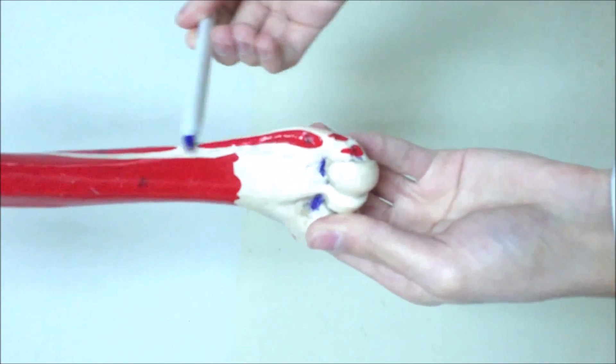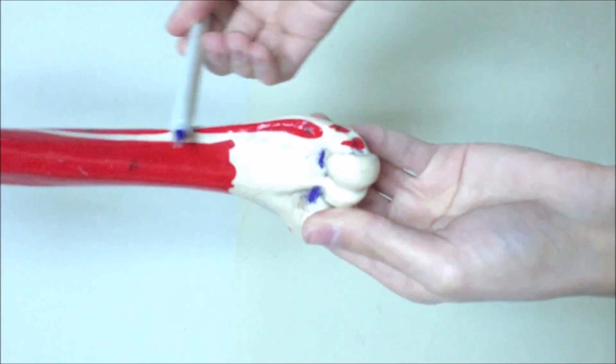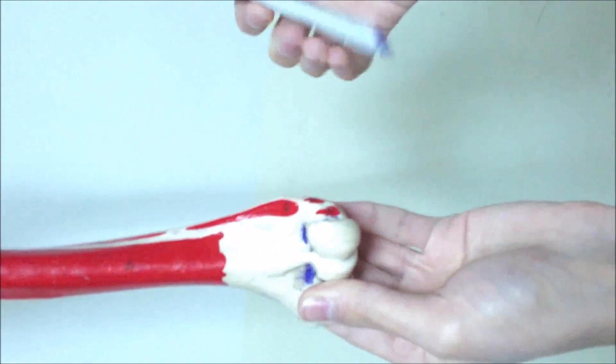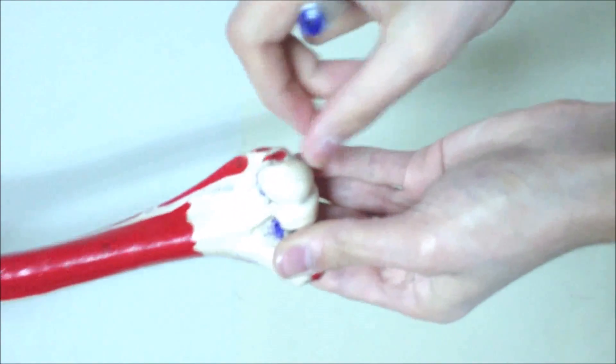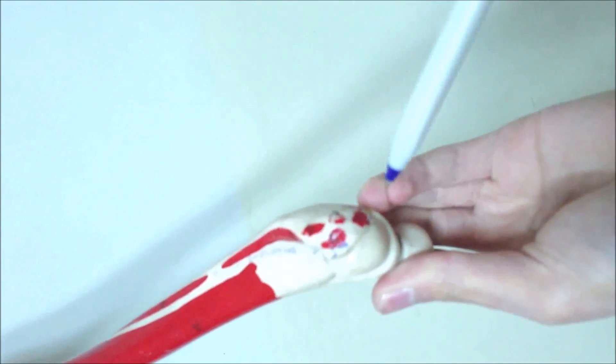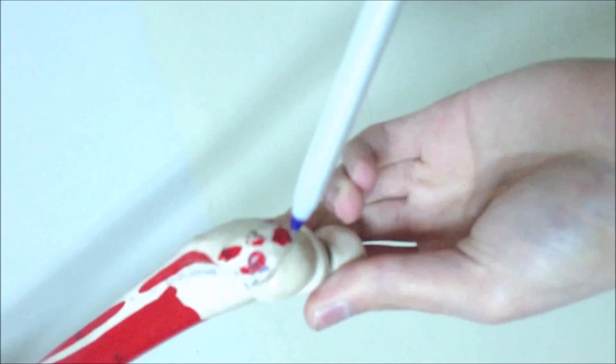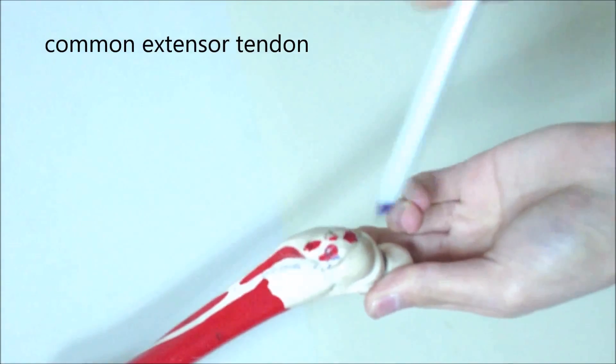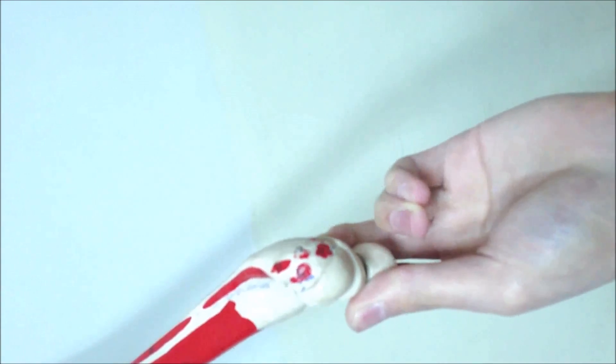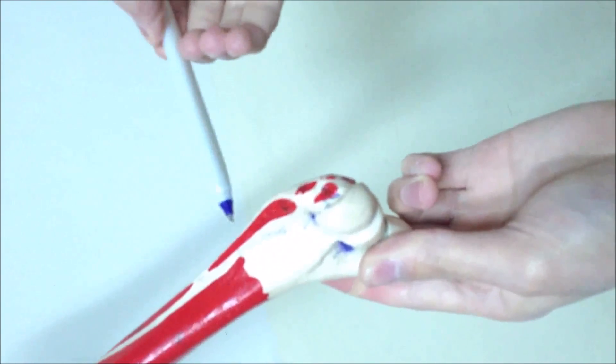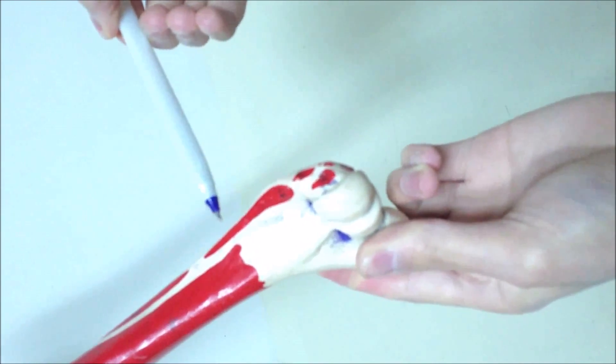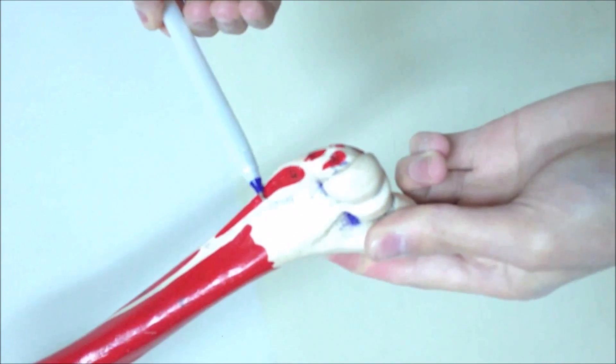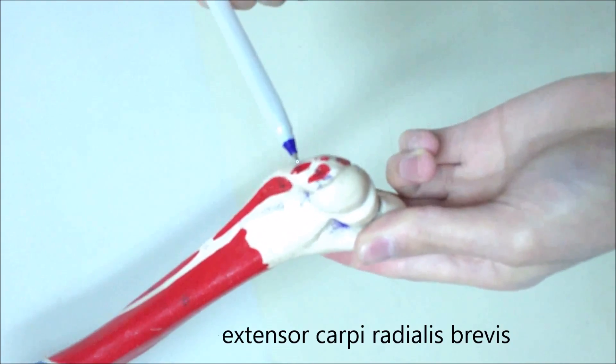Both from the lateral supracondylar ridge of the humerus. From the lateral epicondyle of the humerus, we have the common extensor tendon. Of course, it has many muscles.